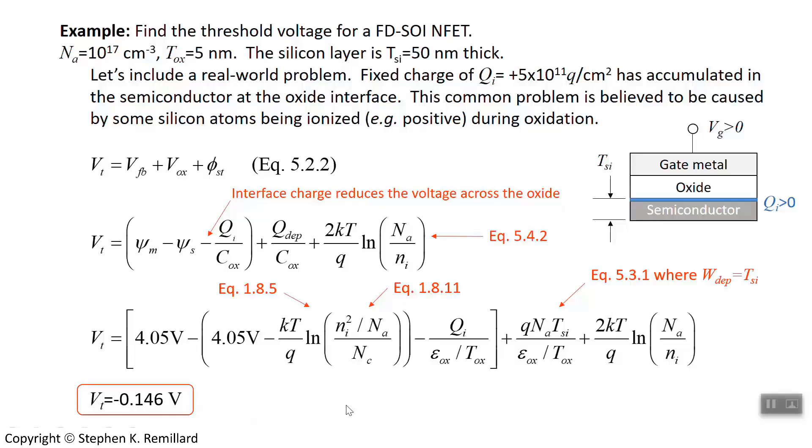A second approach to controlling leakage current is the FinFET. And that's what's been commercially adopted since about the 22 nanometer node. You start off with a semiconducting substrate, and you micromachine a different shape onto it. And so it has this fin. It's called a fin because it looks like a fin. And it's shaped like that, so the FinFET is intrinsically a three-dimensional structure.